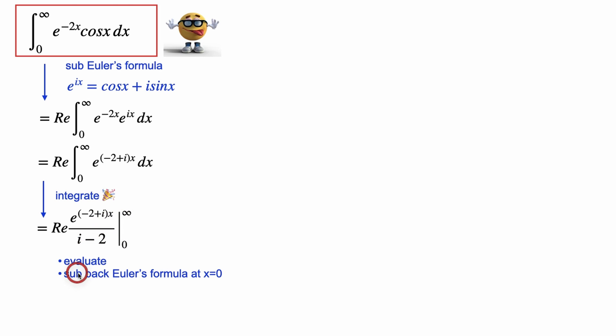If we evaluate it out, in the limit as x goes to infinity, this term becomes 0 because of the negative exponent here. If we sub back Euler's formula, well, this is 1, cos of 0 is 1, and sin of 0 is 0. So this whole thing becomes negative 1, and we'll substitute it into here.